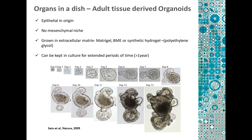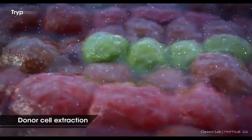These organoids basically start as single cells, and in culture they grow into big organoids. Then they need to be sheared using trypsin and again plated with matrigel so that they grow and can be expanded for long periods.